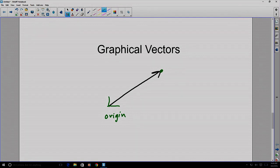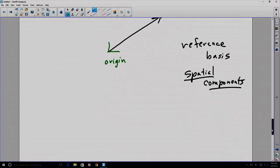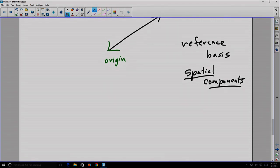If we wish to identify a vector in space, either two-dimensional or three-dimensional space, we'll need a graphical reference basis and either two or three spatial components. Spatial components being measurements of something in space. Some typical reference bases are, first of all,